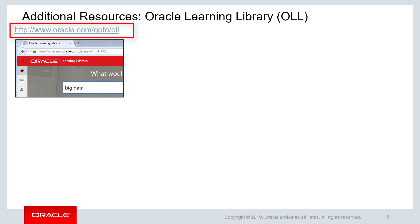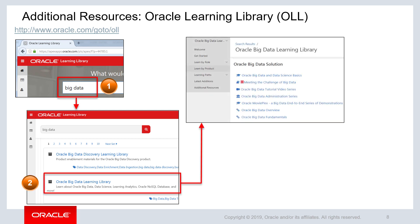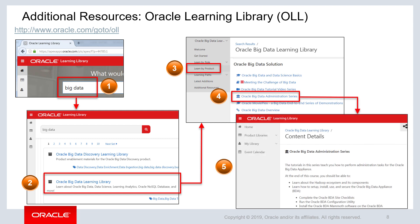First, navigate to the OLL homepage and use the following steps. Enter Big Data in the search field. Click the Oracle Big Data Learning Library. On the left frame of the results page, click Learn by Product. Select a desired solution, such as this course, Oracle Big Data Administration Series. The course landing page is displayed. Use this page to select the lessons that you want to view.